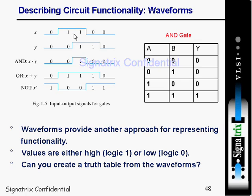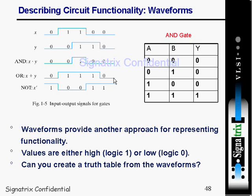Now explaining the AND gate in terms of waveform: with inputs X and Y, if both inputs are 0 you get 0; if one input is 0 you get 0; only when both are 1 do you get 1. For the OR gate waveform: when both are 0 the output is 0; when any input is 1 you get 1.